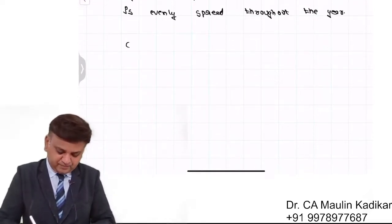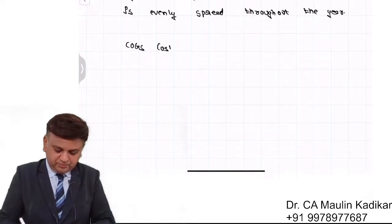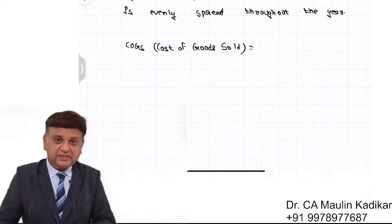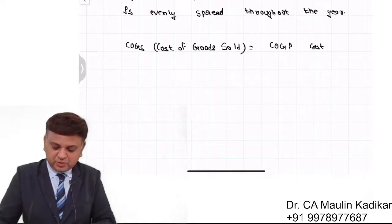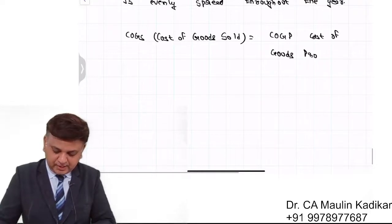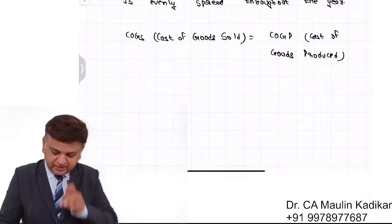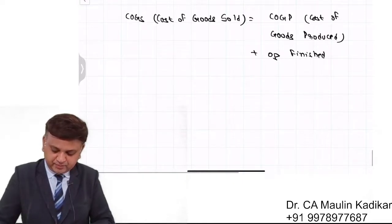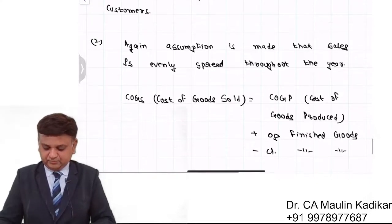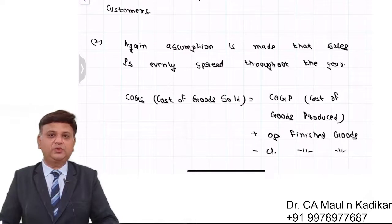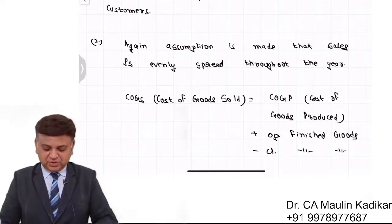Now a small formula. Cost of goods sold is calculated as cost of goods produced plus opening finish goods minus closing finished goods. So whatever was there in the Godown opening finished goods, during the period whatever the cost of goods produced is added minus closing finished goods is cost of goods sold.